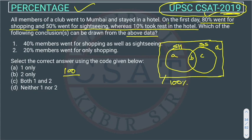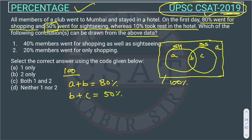For shopping, how many? 80%. So A plus B will be 80%. Now, 50% went for sightseeing — that circle contains B and C, so B plus C equals 50%. And 10% took rest in the hotel — those people are not going for sightseeing and not going for shopping, so that will be D, which equals 10%.